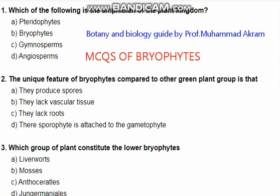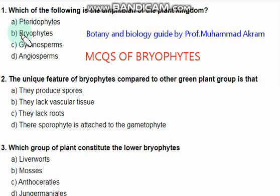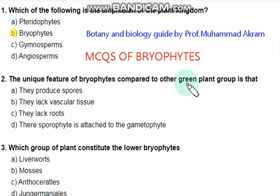The first question is: which of the following is the amphibian of the plant kingdom? Among the given options, the right answer is bryophytes. The next question is: what is the unique feature of bryophytes compared to other green plant groups?